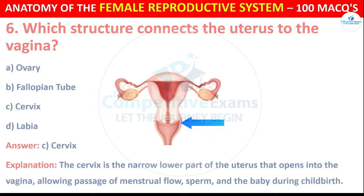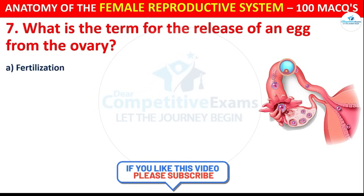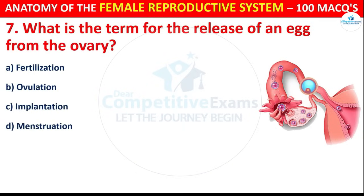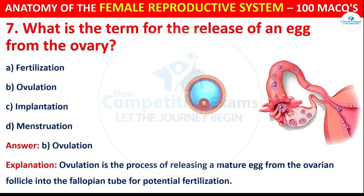Question number 7: What is the term for the release of an egg from the ovary? Options are: Fertilization, Ovulation, Implantation, or Menstruation. The correct answer is B, i.e. Ovulation. Ovulation is the process of releasing a mature egg from the ovarian follicle into the fallopian tube for potential fertilization.